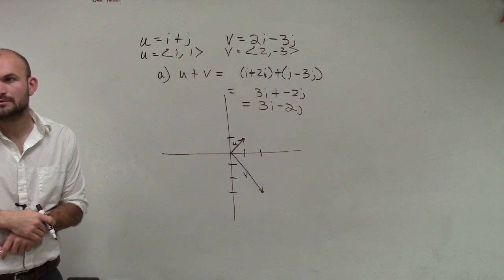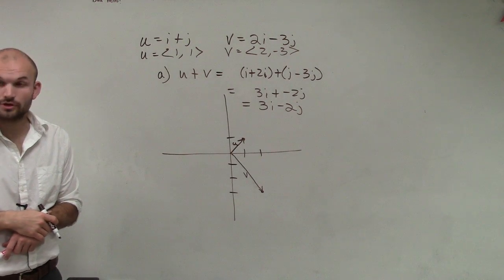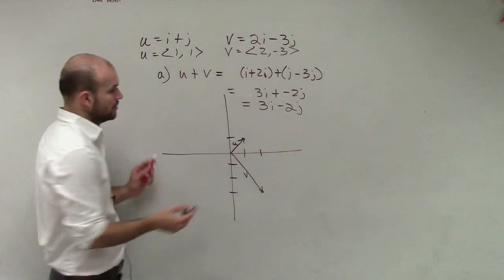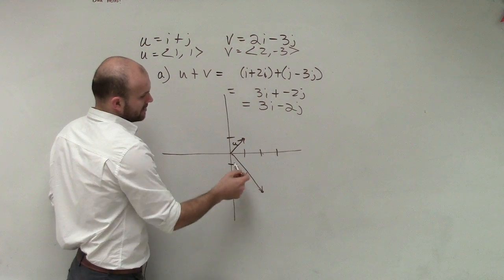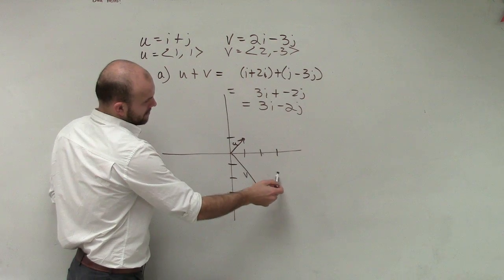So your coordinate of your resultant vector would be over 3, 1, 2, 3, down 2. Okay?